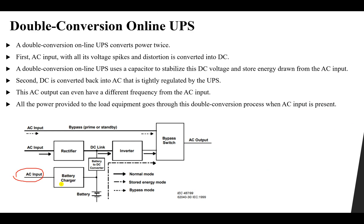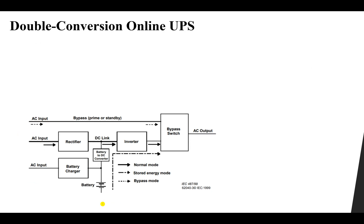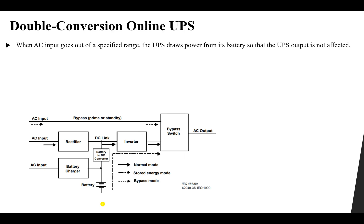We also have a battery charger that takes the AC input and charges the batteries, storing energy for when the AC input goes off or has a problem. This is why the third mode is called the stored energy mode. When the AC input goes outside a specified range, the UPS takes electrical power from the batteries — DC power goes from the battery through the inverter to the AC output.